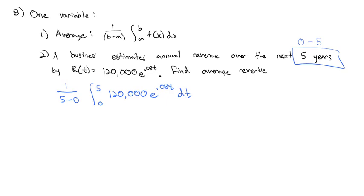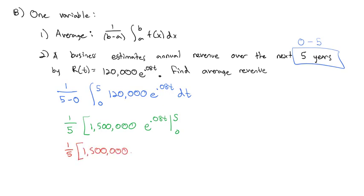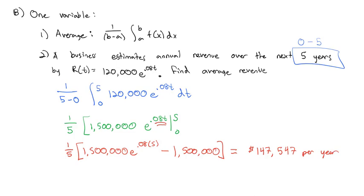We can evaluate this integral to find out how much revenue this company makes on average each year for the five years. The 1 over 5 minus 0 becomes 1 fifth, times e to the stuff divided by 0.08. And 120,000 divided by 0.08 is 1,500,000. So we have 1 fifth times 1,500,000 e to the 0.08 times 5 minus 1,500,000. When we plug 0 in we get e to the 0 which is 1. Plugging this into our calculator, on average we're going to have $147,547 per year.